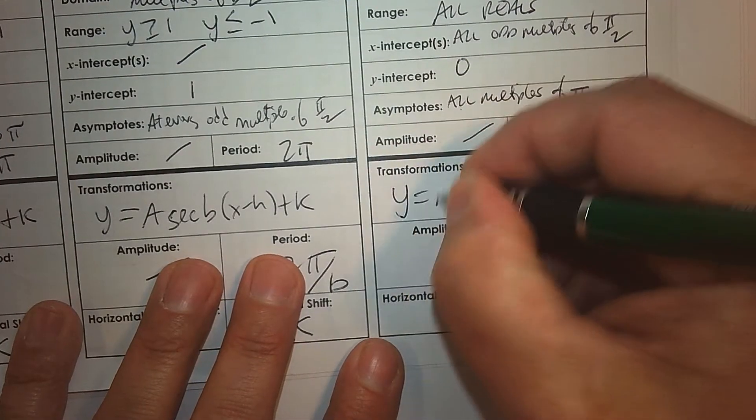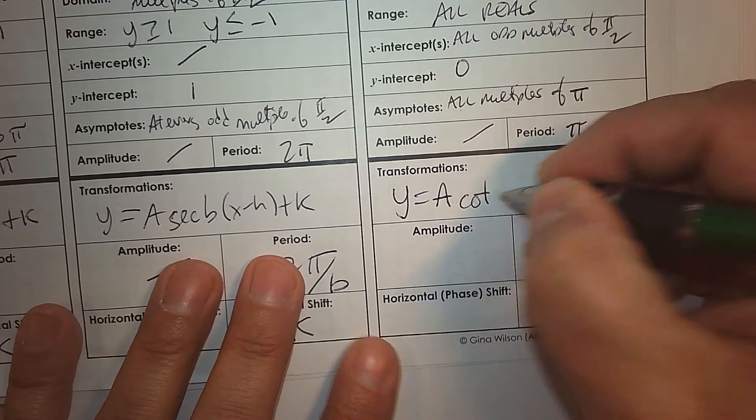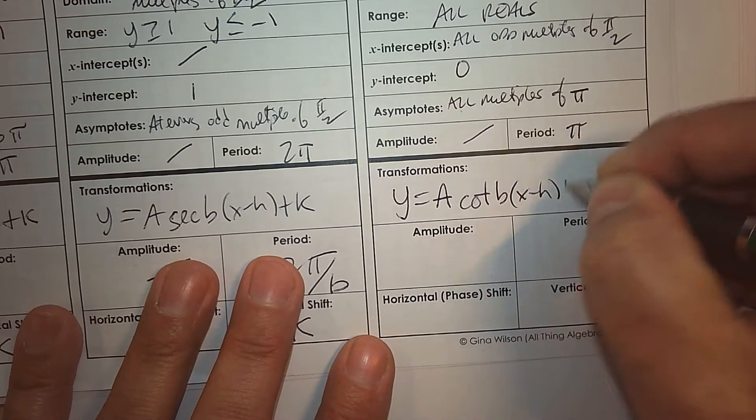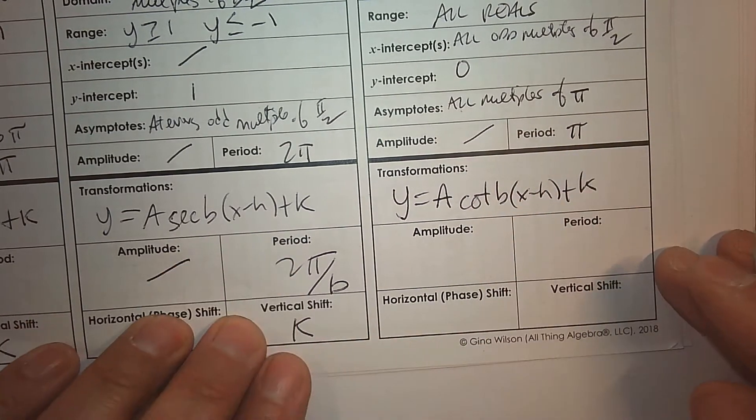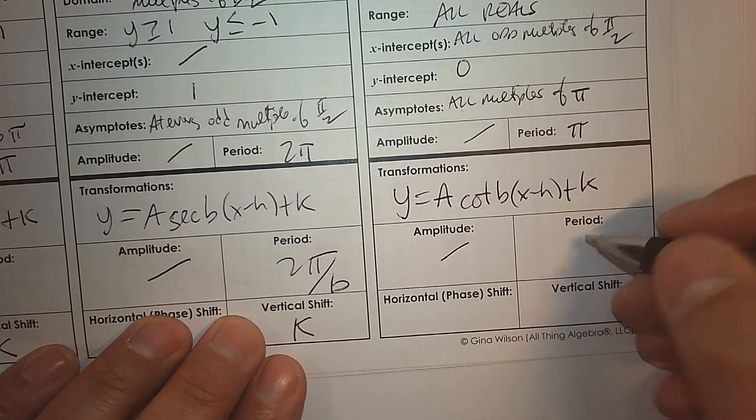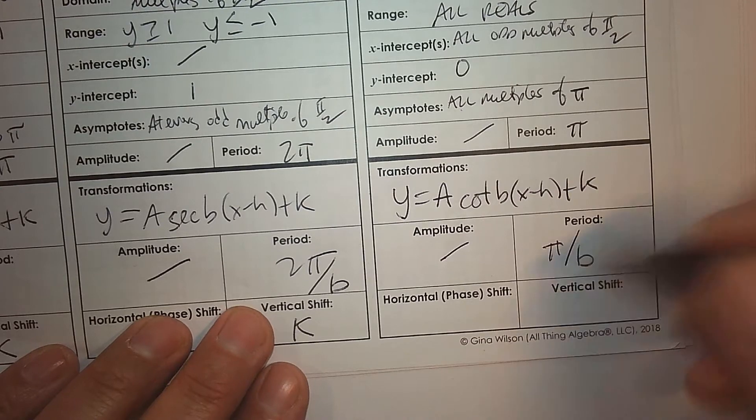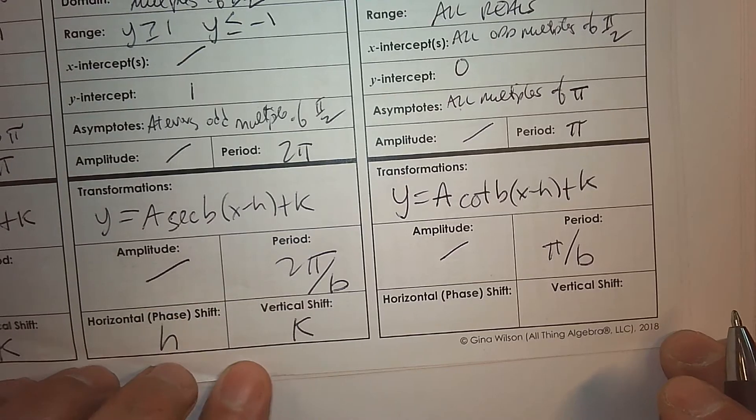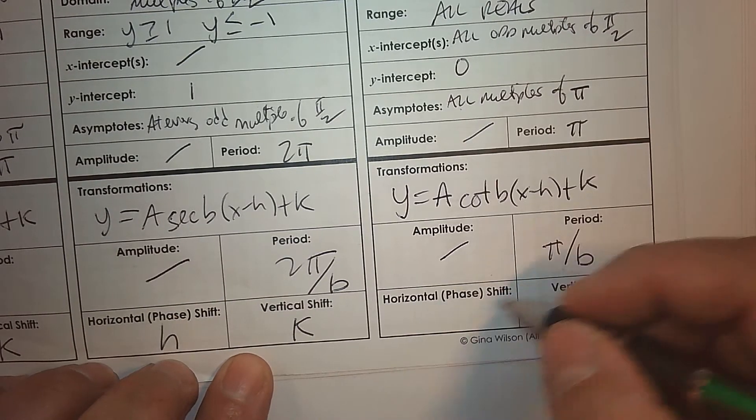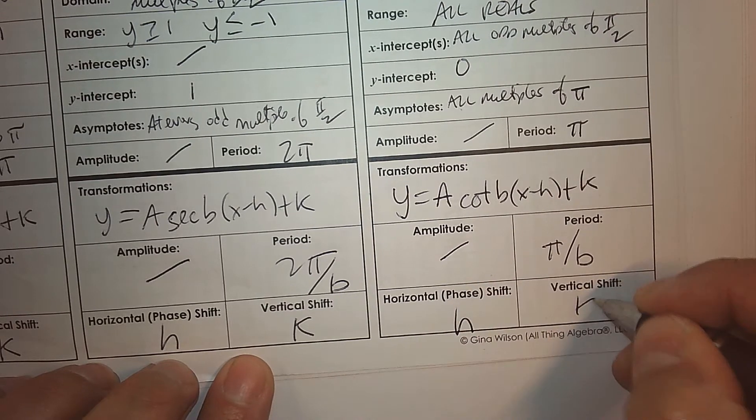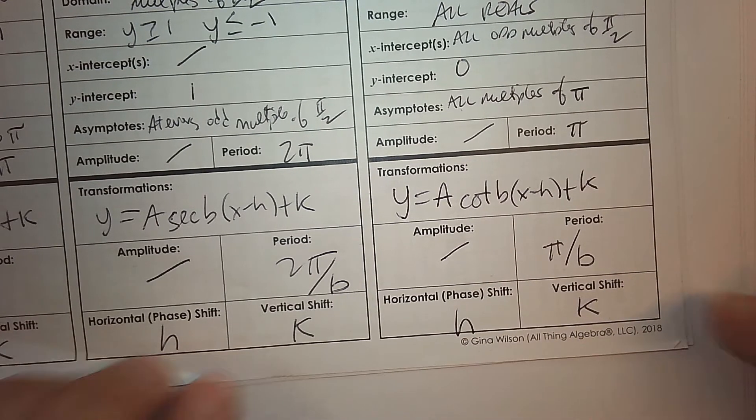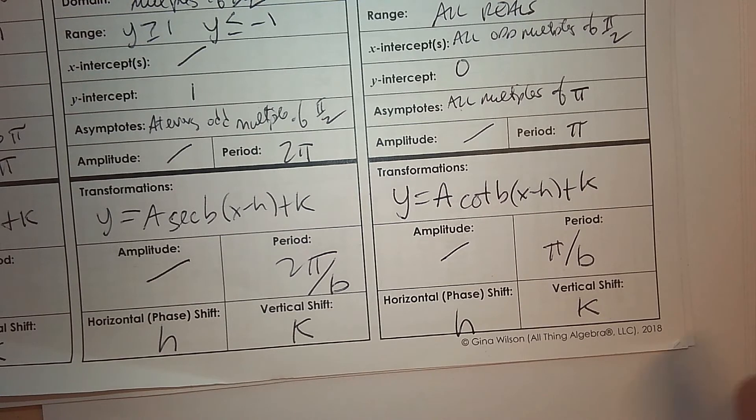The transformation, so if we had the same idea here, there's no amplitude, but the period would be pi. And if you have a number being multiplied or whatever, you'll undo that by multiplying or dividing. The horizontal or phase shift is h, and the vertical shift is k. So there's a reference for each one before we start applying the transformation.